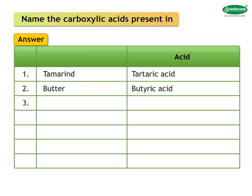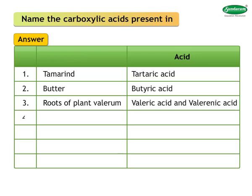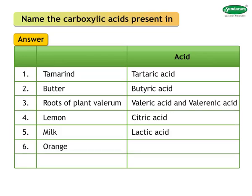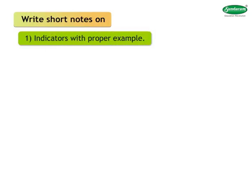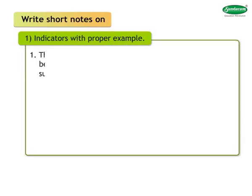Three: roots of plants contain valeric acid and valerianic acid. Four: lemon contains citric acid. Five: milk contains lactic acid. Six: orange contains citric acid. Seven: red ants contain formic acid.